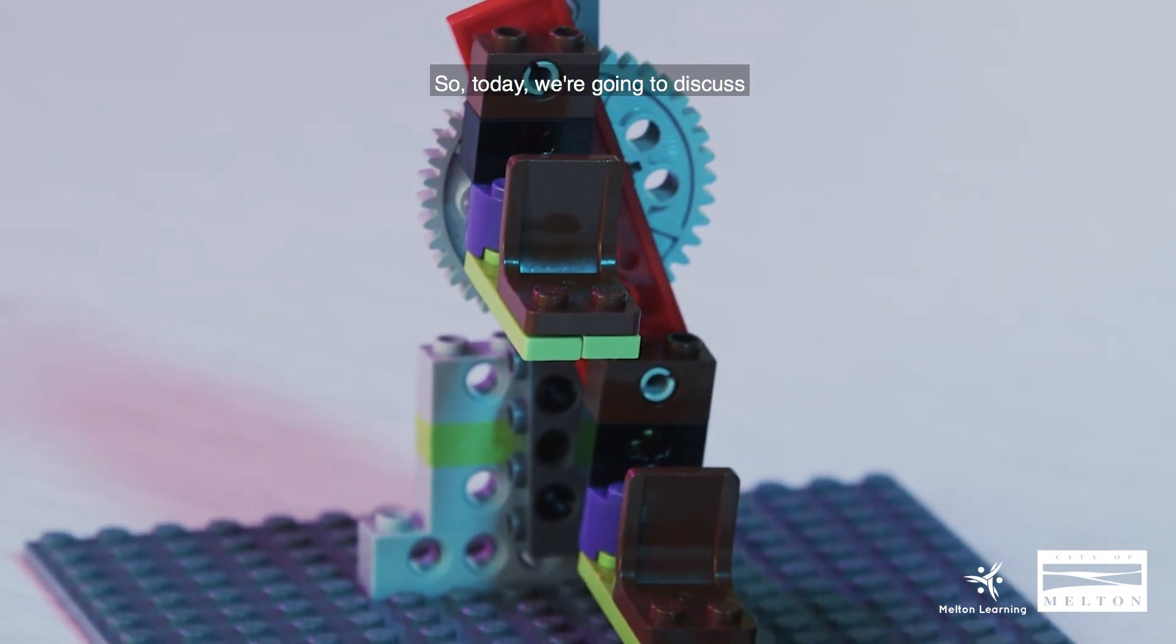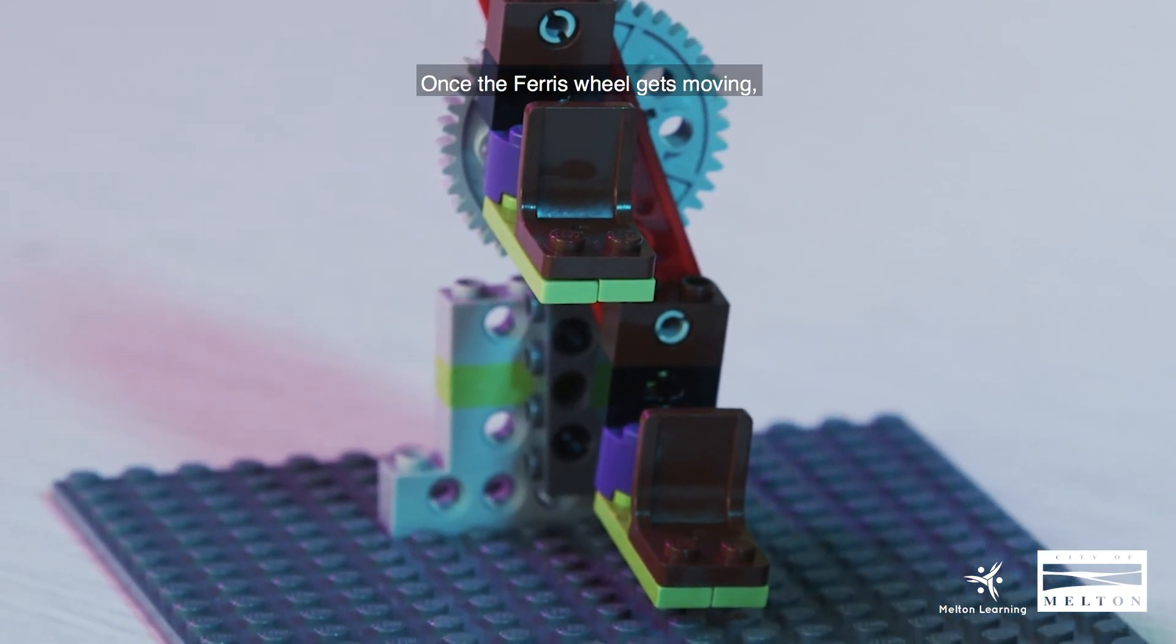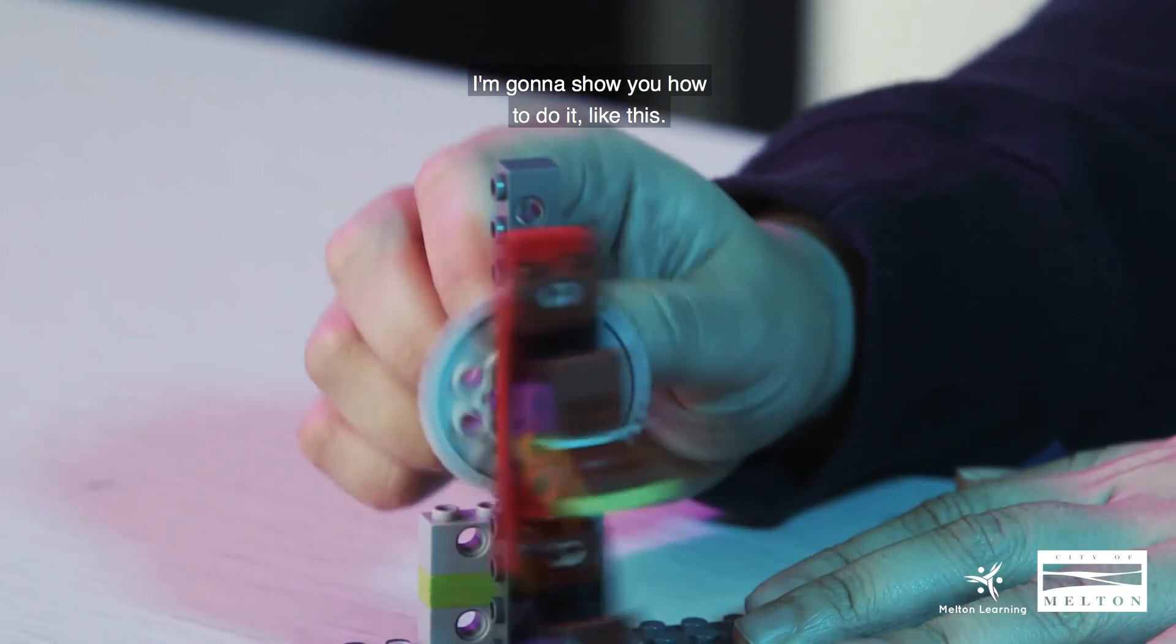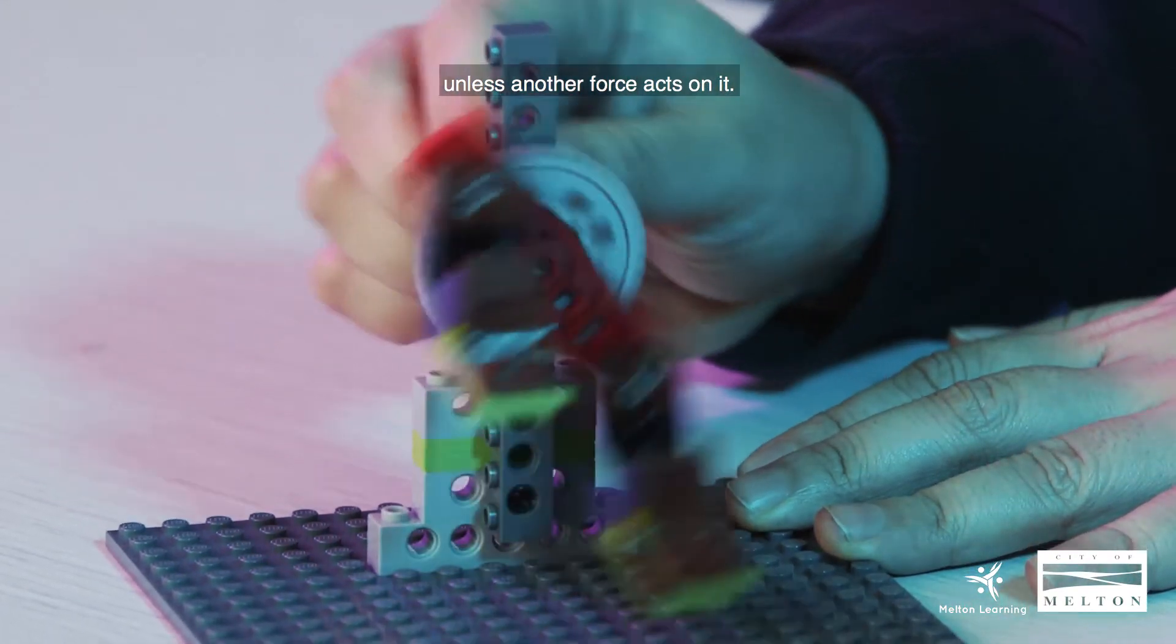So today we're going to discuss two laws that are at work on a Ferris wheel. So one law is the law of inertia. Once the Ferris wheel gets moving, that law explains that it will keep moving unless another force acts on it.